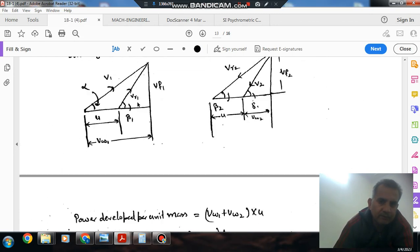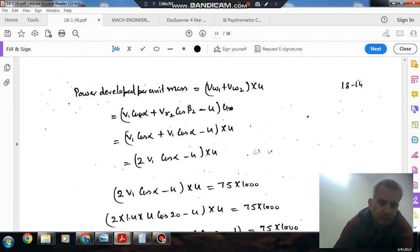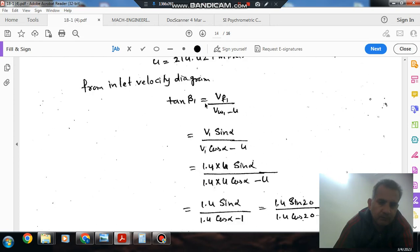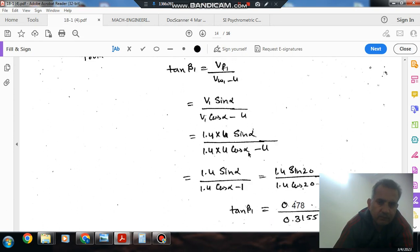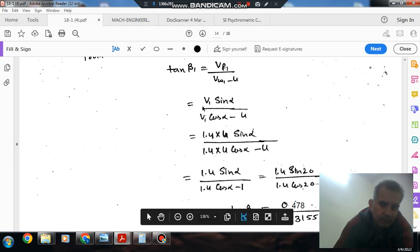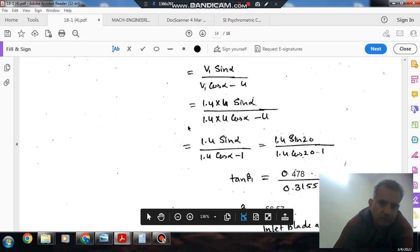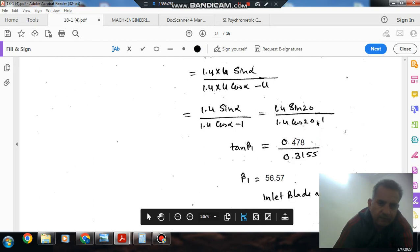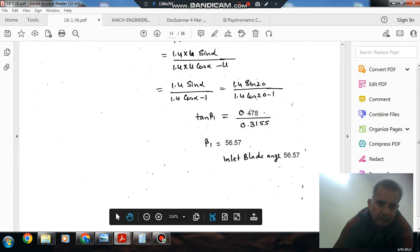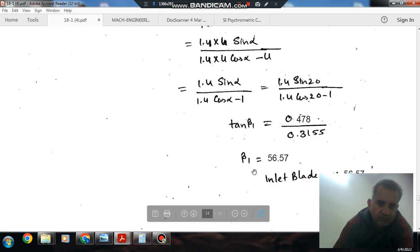From the inlet velocity diagram, tan beta1 equals Vf1 divided by Vw1 minus U. Vf1 equals V1 sin alpha and Vw1 equals V1 cos alpha. We can take U as common and cancel. Putting V1 equals 1.4U and solving, we get tan beta1, which gives beta1 equals 56.57 degrees.